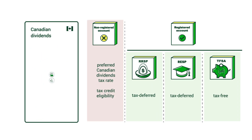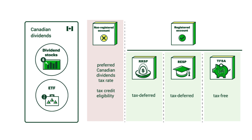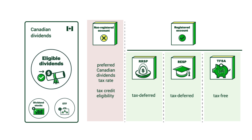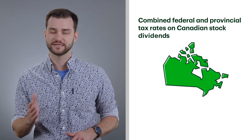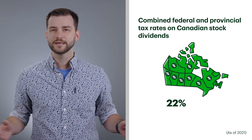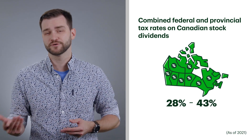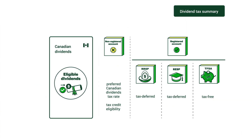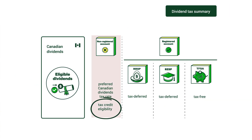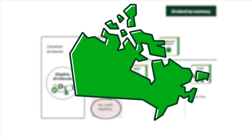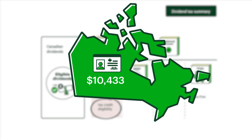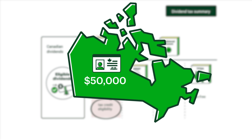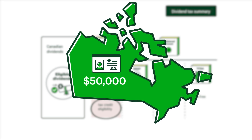It's a different story for income derived from Canadian dividend stocks and ETFs. Some larger corporations pay out dividends using their after-tax dollars as a reward to shareholders. These are called eligible dividends, and they're taxed at much lower rates than interest-based income. The combined federal and provincial tax rates on Canadian stock dividends depends on where you live, but it ranges between roughly 28% and 43% as of 2021. There are also tax credits available for this income that can make dividends highly tax efficient. In most provinces and territories, Canadian residents with no other sources of income can earn about $50,000 in Canadian stock dividends without paying any tax at all.